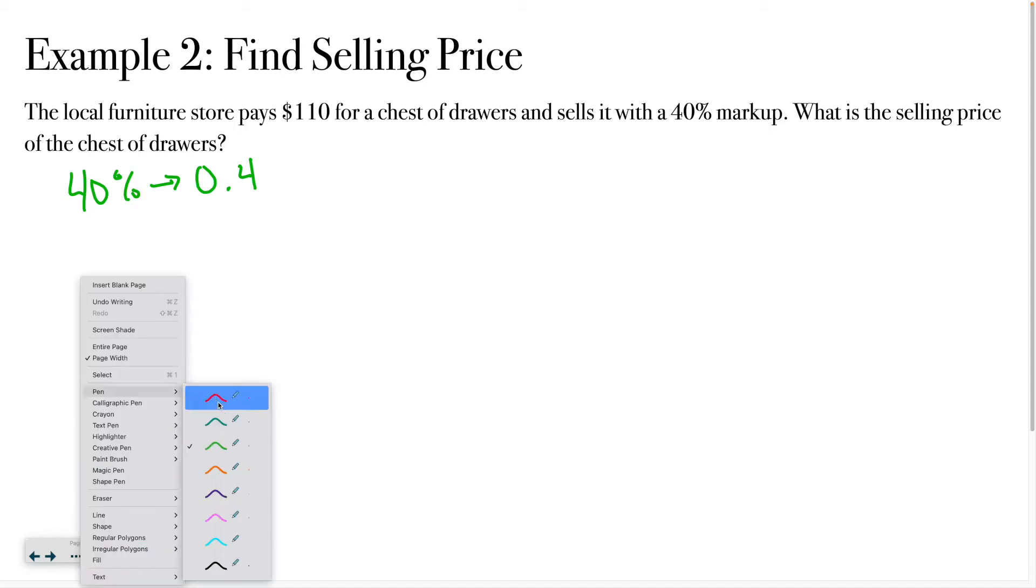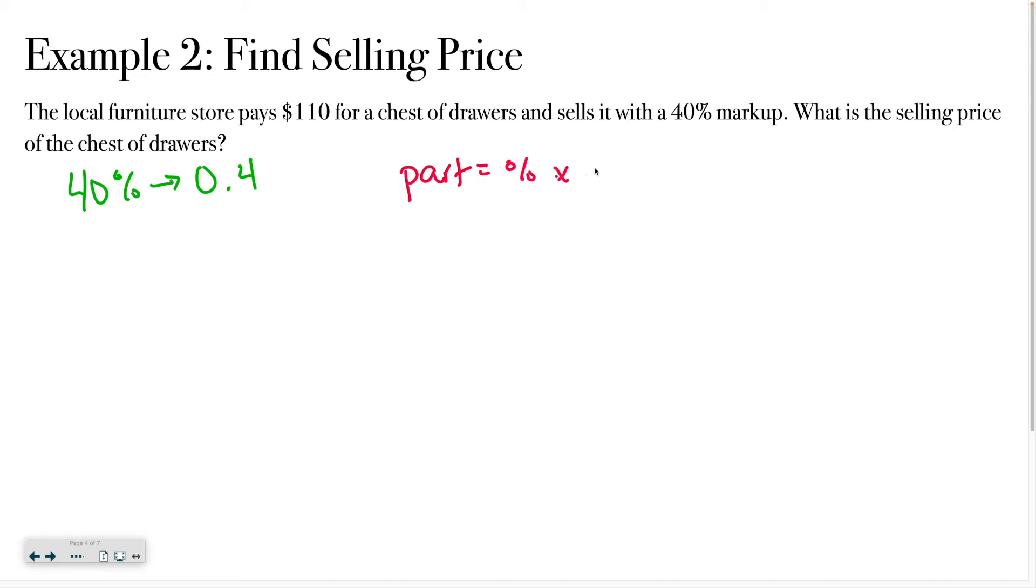And then if I want to figure out what the selling price is, I'm still going to use that part equals percent times whole. And right now I have to figure out what that percent markup is, that part - or not the percent because I know it's 40%, but I have to figure out what that part is. So instead of writing percent, I'm going to do 0.4 times what the furniture store paid, they paid $110.